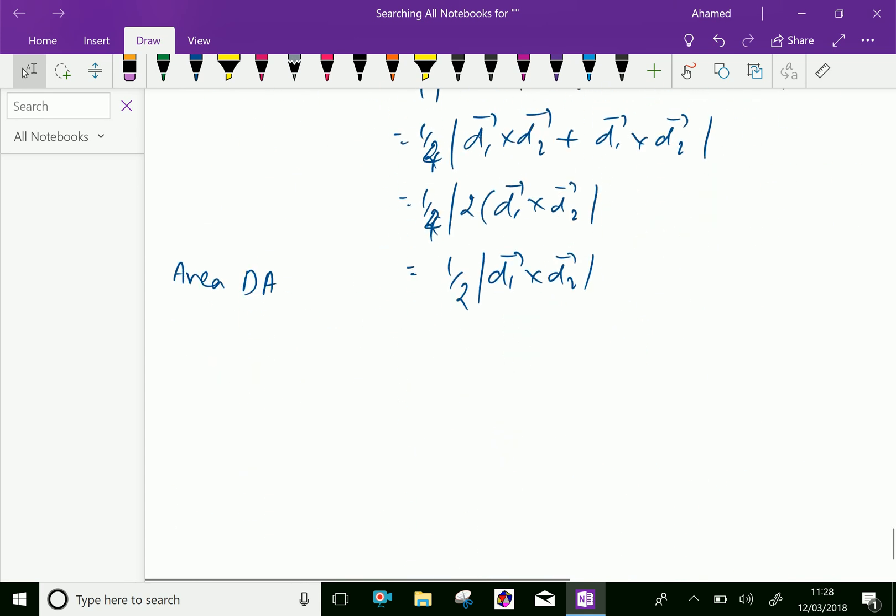So area of parallelogram ABCD in terms of its diagonal is half into modulus of vector D1 cross vector D2. We have done, please subscribe our YouTube channel.